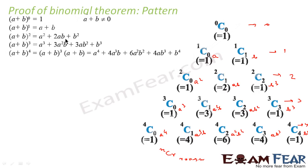Also, we have observed that the sum of the powers is always equal to n. For example, for (a+b)¹ the power of a is 1. For (a+b)² we have a² (2+0), 2ab (1+1), b² (0+2). For (a+b)³: 3+0=3, 2+1=3, 1+2=3, 0+3=3. Similarly for power 4: 4+0=4, 3+1=4, 2+2=4, 1+3=4, 0+4=4. Additionally, we observe that the number of terms is equal to n+1.